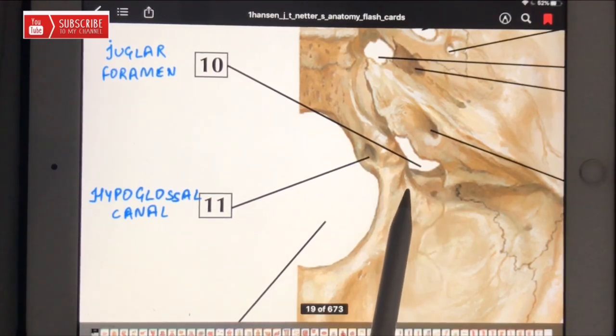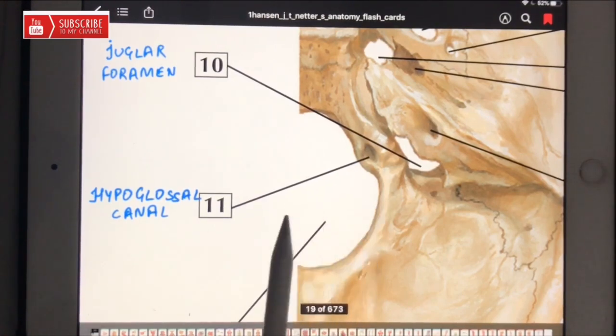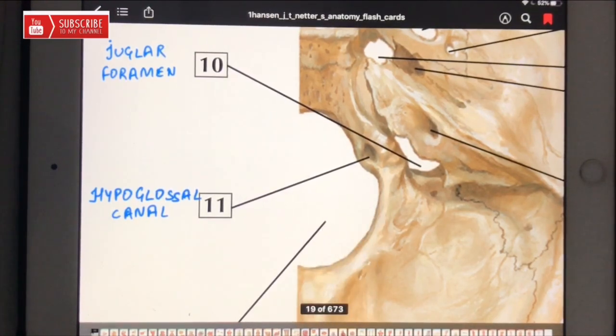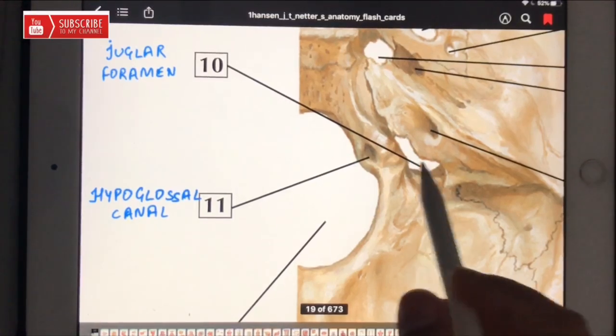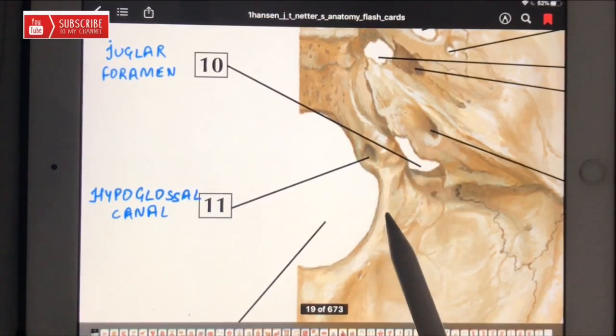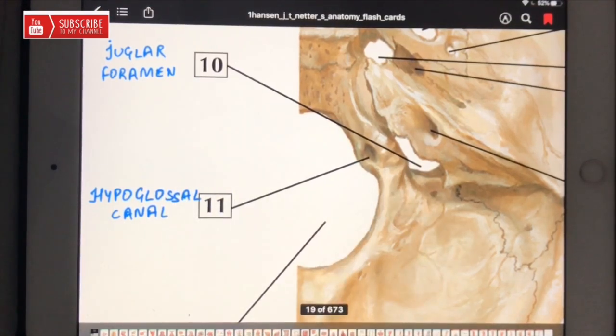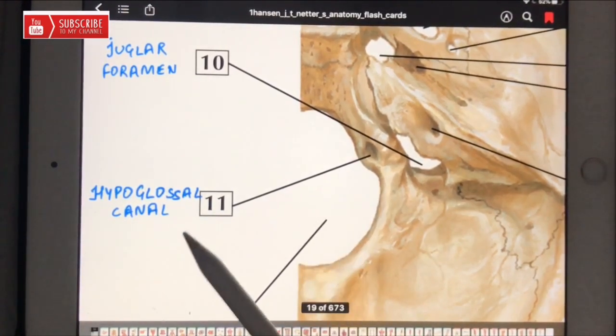These are the glossopharyngeal nerve, that is the ninth cranial nerve, the vagus nerve, that is the tenth cranial nerve, the accessory or spinal nerve, that is the eleventh cranial nerve passes. As well as in the jugular foramen there will be the inferior petrosal sinus, sigmoid sinus, and posterior meningeal artery also passes through the jugular foramen.